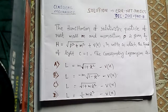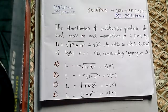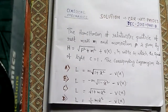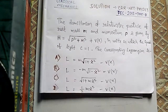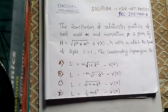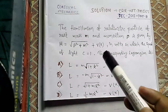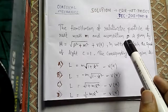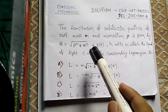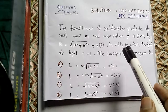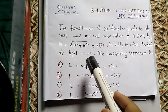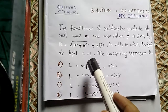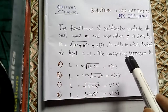Hello friends, this is Vidhan. Welcome to my channel. Today I take a problem of classical mechanics based on Lagrangian and Hamiltonian dynamics from December 2013, Part B. It says the Hamiltonian of a relativistic particle of rest mass m and momentum P is given. This is the Hamiltonian in units in which the speed of light c equals 1, a condition to be used later.